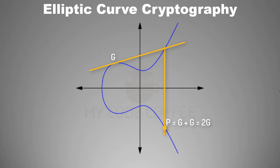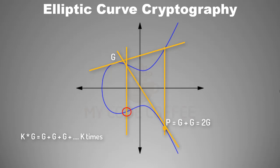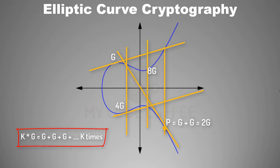Suppose you want to multiply g and k — that means you have to add g k times: k multiplied by g equals g plus g plus g, k times. You continue this process of addition until you get kg. Starting from 2g, draw a tangent on this point; it cuts the curve at another point. Drop a perpendicular from that point and the resulting curve intersection is 2g plus 2g equals 4g. Repeat: draw a tangent on 4g, drop a perpendicular, and you get 4g plus 4g equals 8g. You can keep doing this until you get kg. This is how multiplication is defined on an elliptic curve.